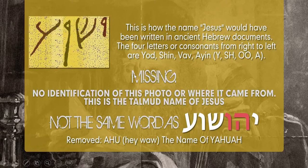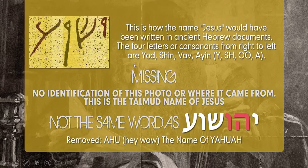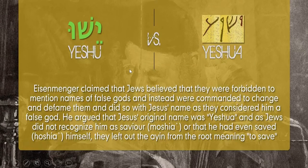Now, looking at the screen — the Jews that call themselves Jews are trying to lie to us. They're saying this is how Jesus would have been written in ancient Hebrew documents, the four letters read from right to left. But we can see clearly that's not how it is spelled. As you can see from the reading here, there is no identification of where this photo came from. This is a Photoshop — a CGI, computer-generated image. This is not any ancient manuscript, not a scroll from the Dead Sea Scrolls. They are just trying to deceive us about who they are.